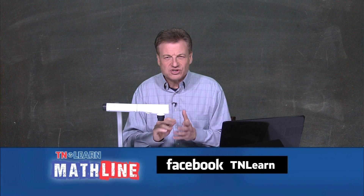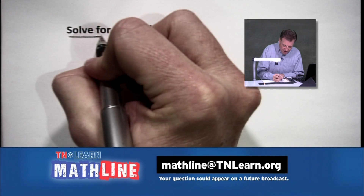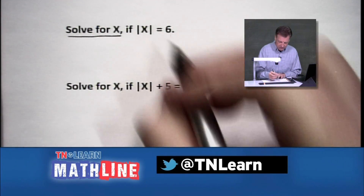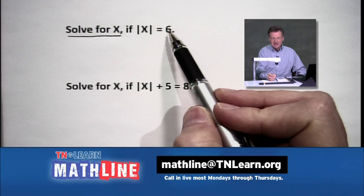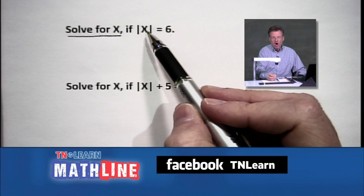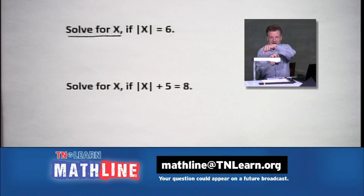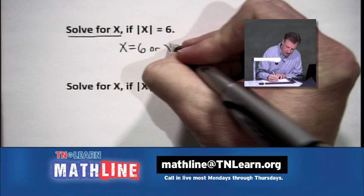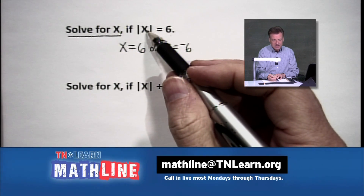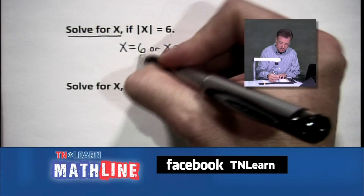Now let's look at how we solve when we have variables inside and make equations. It says: solve for x if the absolute value of x equals 6. I'm looking for numbers — notice I said numbers plural — because there's more than one number that gives a positive 6. We're looking for two numbers that are 6 units away from zero. We've got two solutions: x equals 6, or x equals negative 6.